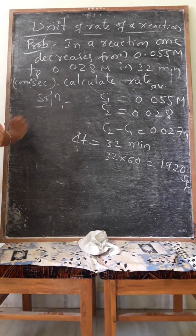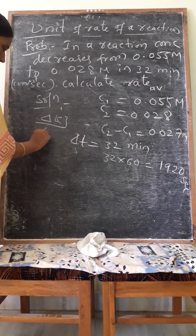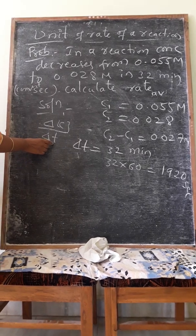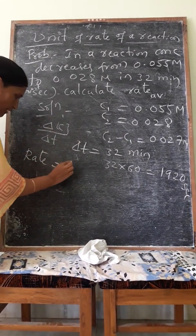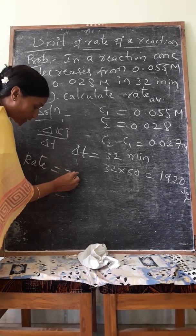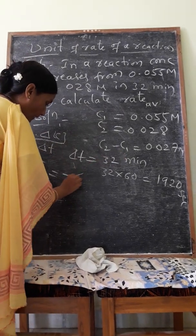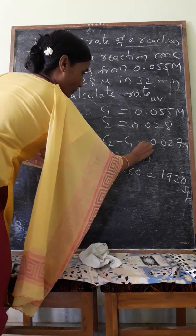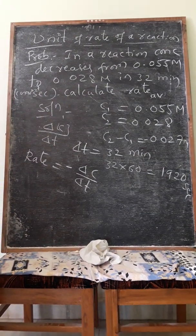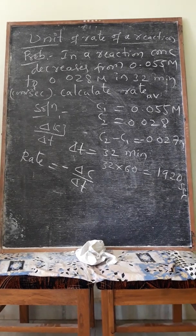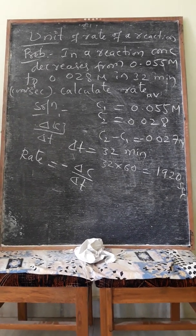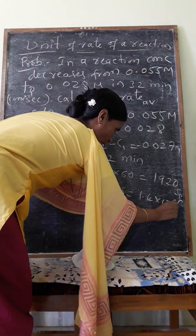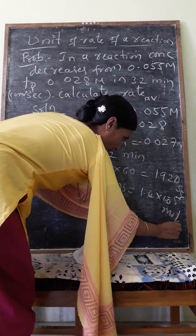The concentration change: C1 = 0.055, C2 = 0.028. Delta C = C2 minus C1 = 0.027 mol/L. Delta t = 1920 seconds. Rate equals minus delta C divided by delta t. Substituting values, the rate equals 1.4 × 10⁻⁵. Answer is 1.4 × 10⁻⁵ mol per liter per second.